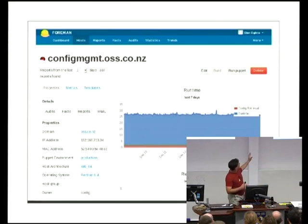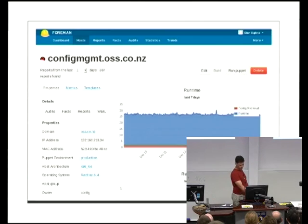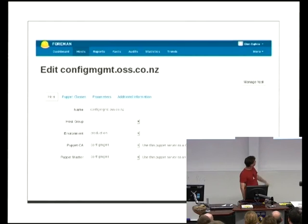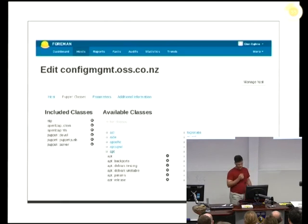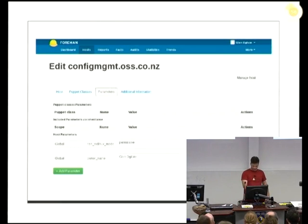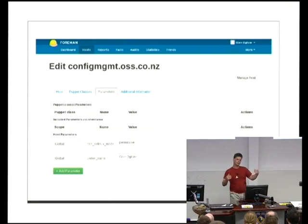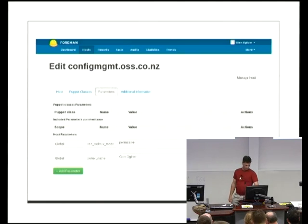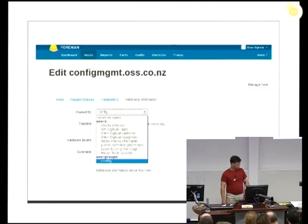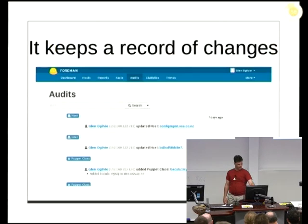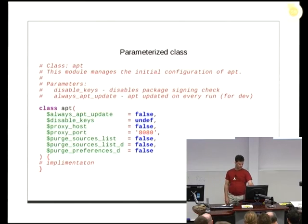This is a view of a single host in Foreman - you get a report of what's going on. If you choose to edit a host, you can set some variables; this is where you'd set the host group and environment. Puppet classes are shown and you can drag and drop them to push them between categories. You'd set your parameters and potentially override parameters set at a higher level, like at a host group. Foreman keeps track of everything you're doing with an audit log.